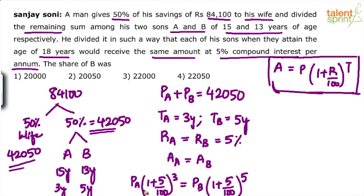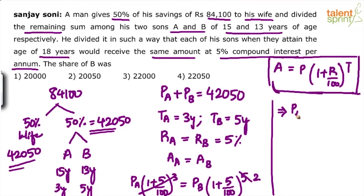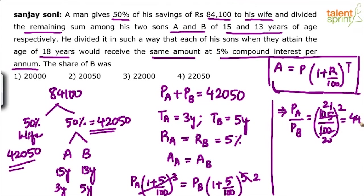If you observe, this is like x³ and x⁵. Using the rule A^M ÷ A^N = A^(M−N), we can subtract 3 from 5, giving power 2. So simplifying, PA/PB = (1 + 5/100)². Now 1 + 5/100 is 105/100, which simplifies to 21/20. So PA/PB = (21/20)² = 441/400.